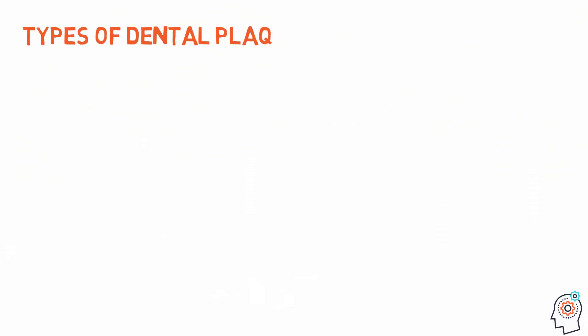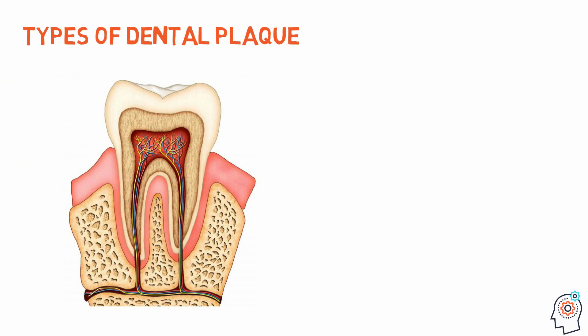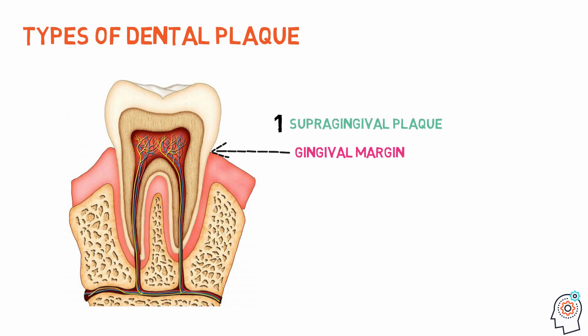The most common classification of dental plaque is based on its relationship to the gingival margin — the line where the crown of the tooth meets the gums. Supragingival plaque is the most common type, covering the visible part of the tooth and the gingival tissues. Subgingival plaque accumulates under the gums and is the type most usually causing dental health problems.